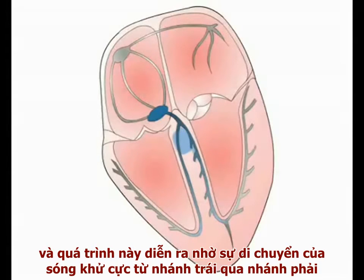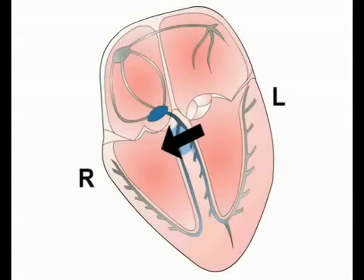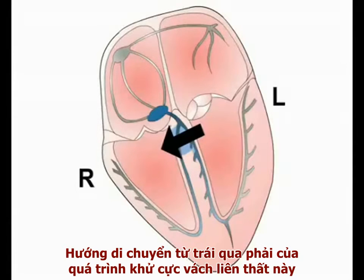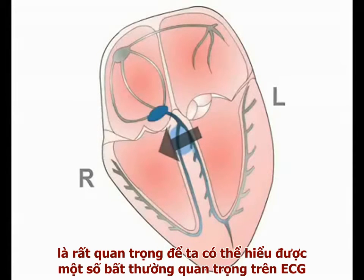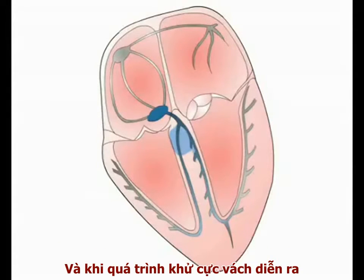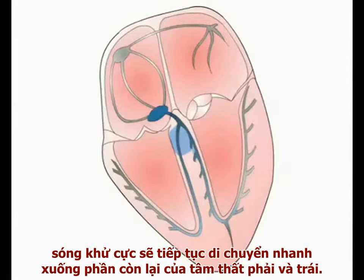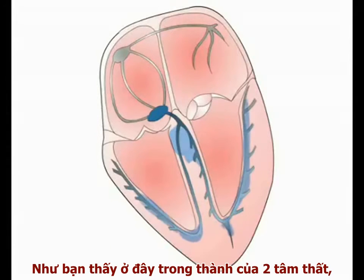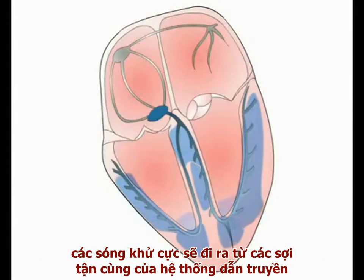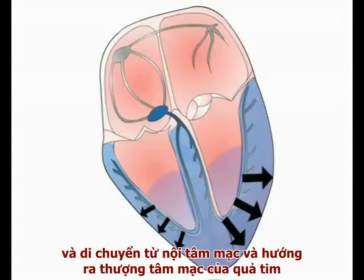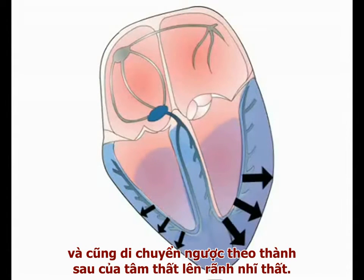Septal depolarisation occurs by movement of current across the septum from the left towards the right bundle branch. We'll see later that this early left-to-right movement of current in the septum is crucial to understanding several important ECG abnormalities. As septal depolarisation is taking place, the depolarising wave begins to spread rapidly through the bulk of the left and right ventricles. In the walls of the ventricles, depolarisation spreads from the terminal fibres of the conducting system outwards from the endocardium towards the epicardial surface of the heart, and also back along the ventricular wall to the atrioventricular groove.